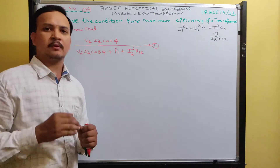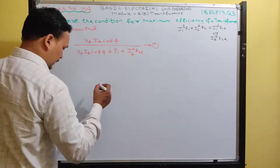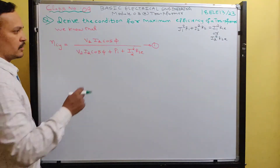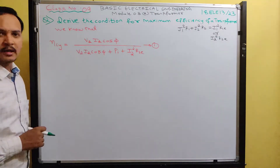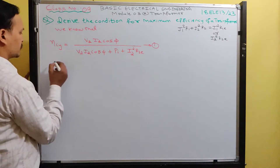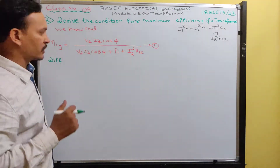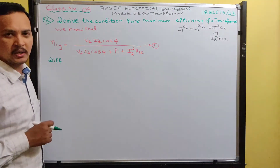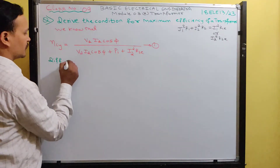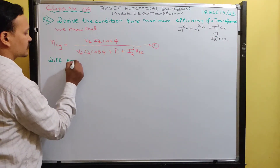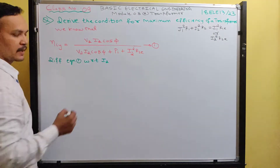In order to obtain the condition for maximum efficiency, we have to differentiate equation 1 with respect to current I2. Some students are thinking: why differentiation only, why not integration? I will give you the reason. Differentiate equation 1 with respect to current.